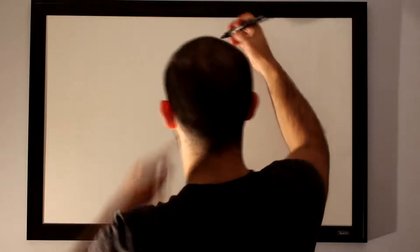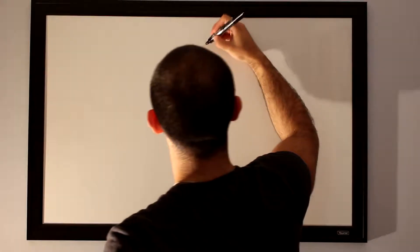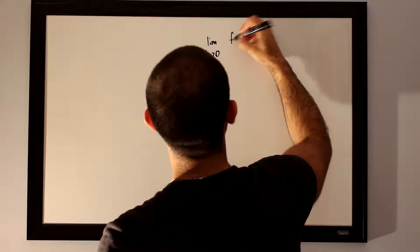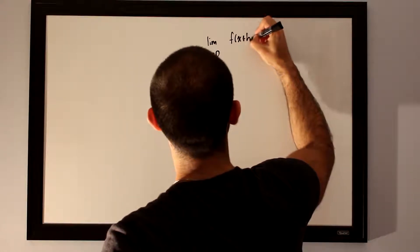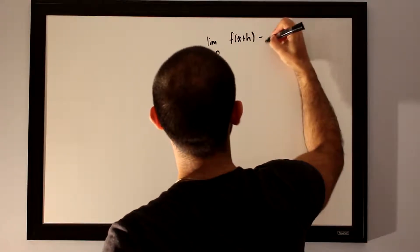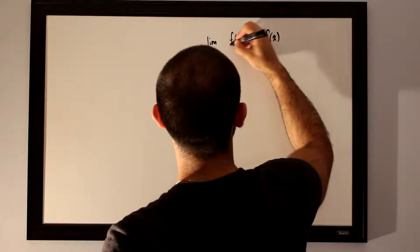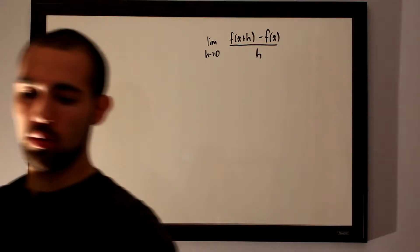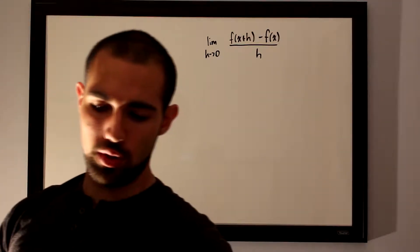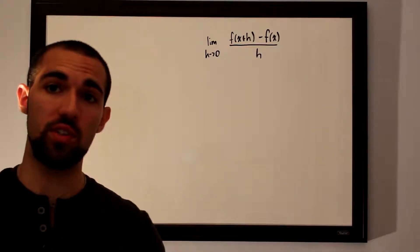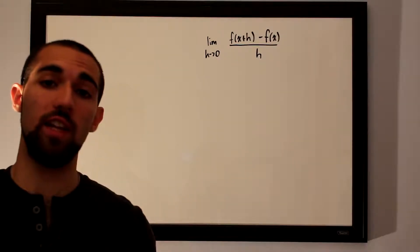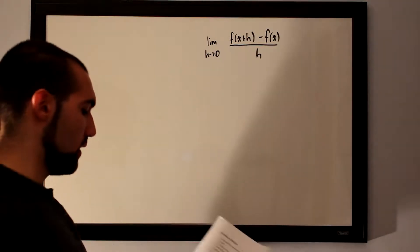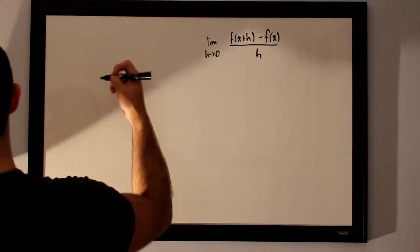The limit definition of a derivative is defined as the limit as h approaches zero for f of x plus h minus f of x over h. Let me give you a couple of steps you can follow for pretty much any limit definition problem. Steps for taking derivatives.